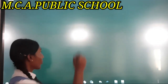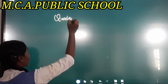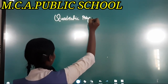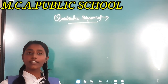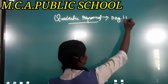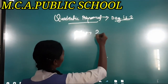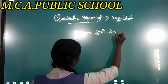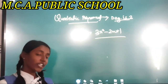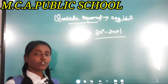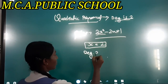A quadratic polynomial is a type of polynomial whose degree is two. For example, 3x² − 2x + 1 is a quadratic polynomial because the variable is x and the highest power of this variable is 2, so the degree of this polynomial is two.